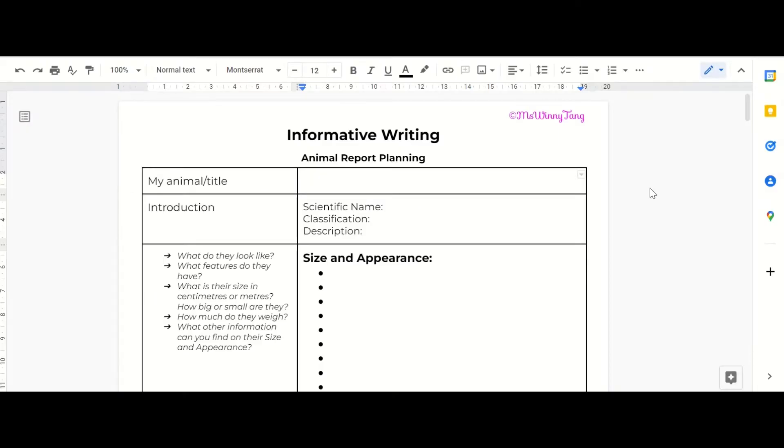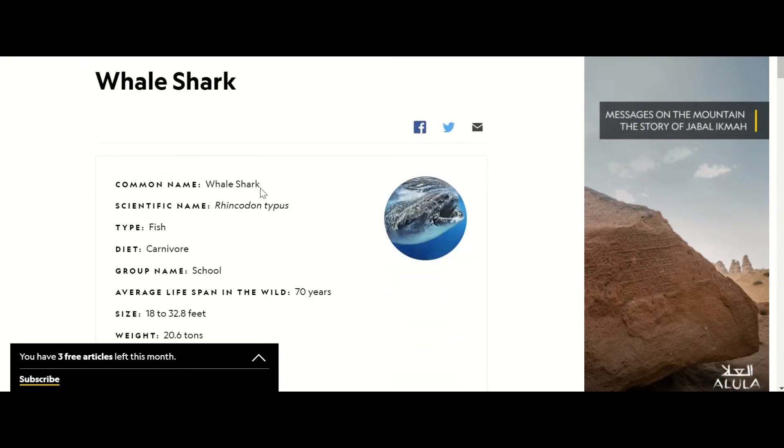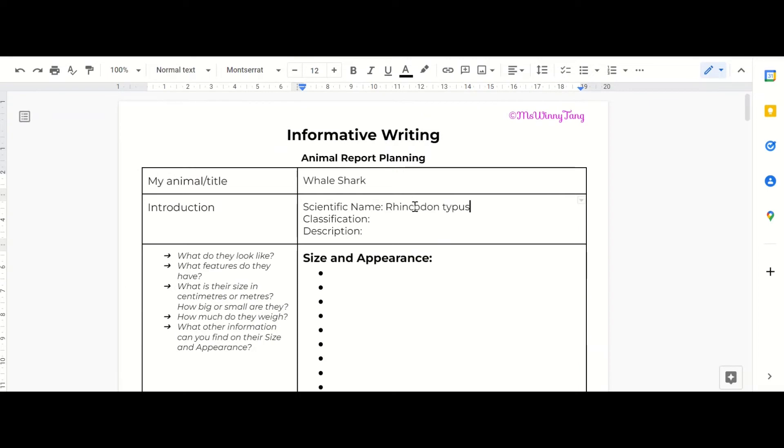I'll show you how I go through the planning process of picking out the information for the introduction. My animal or my title is going to be whale shark. I'm going to look for a scientific name, classification and a description for my introduction. So I'm going to have a look at my first website, National Geographic, and as you can see we have got common name whale shark, scientific name. Ready to go, so let's put that here.